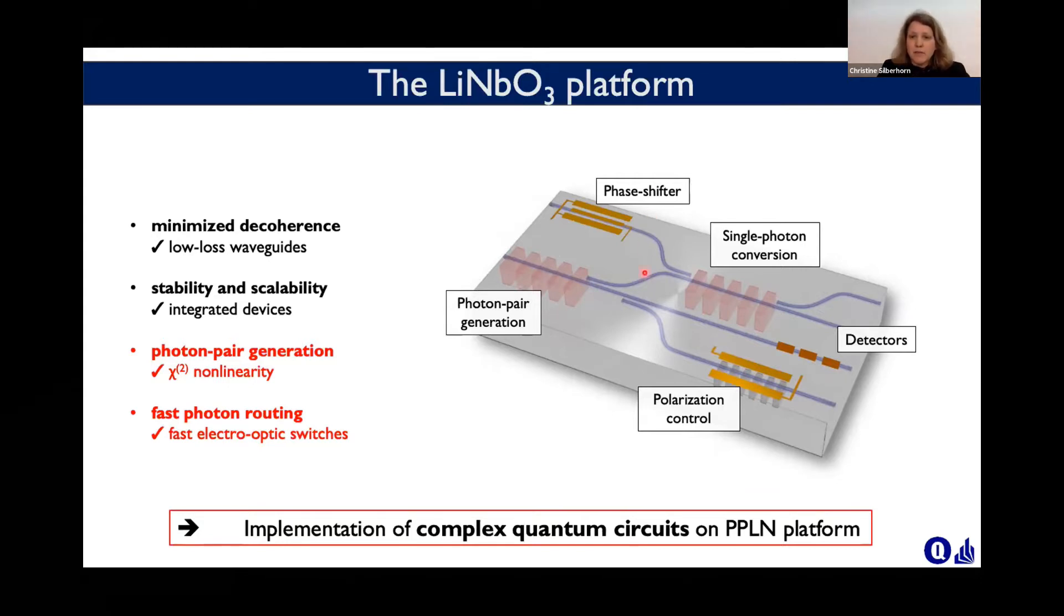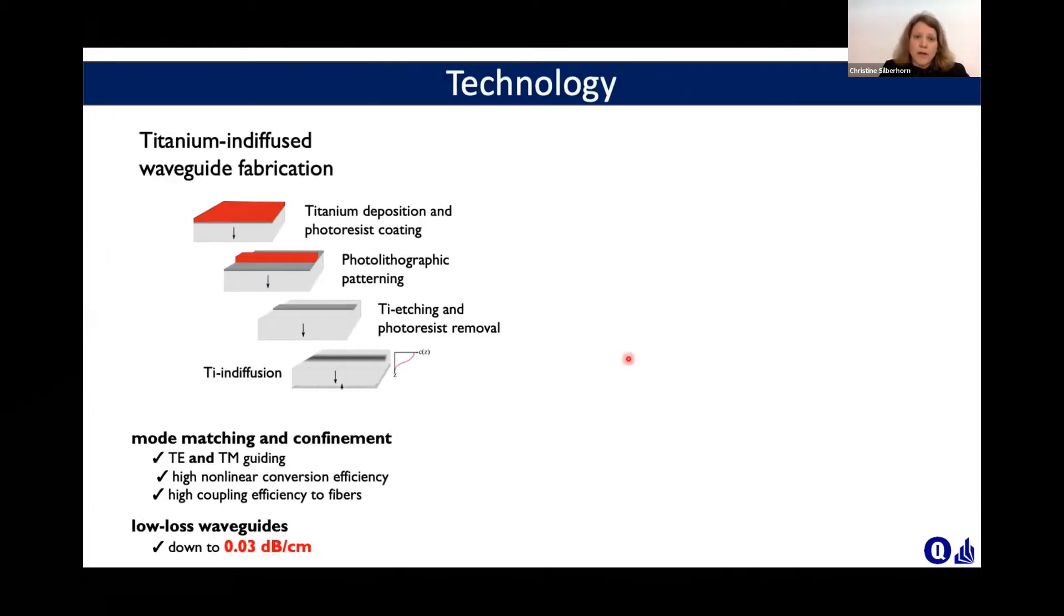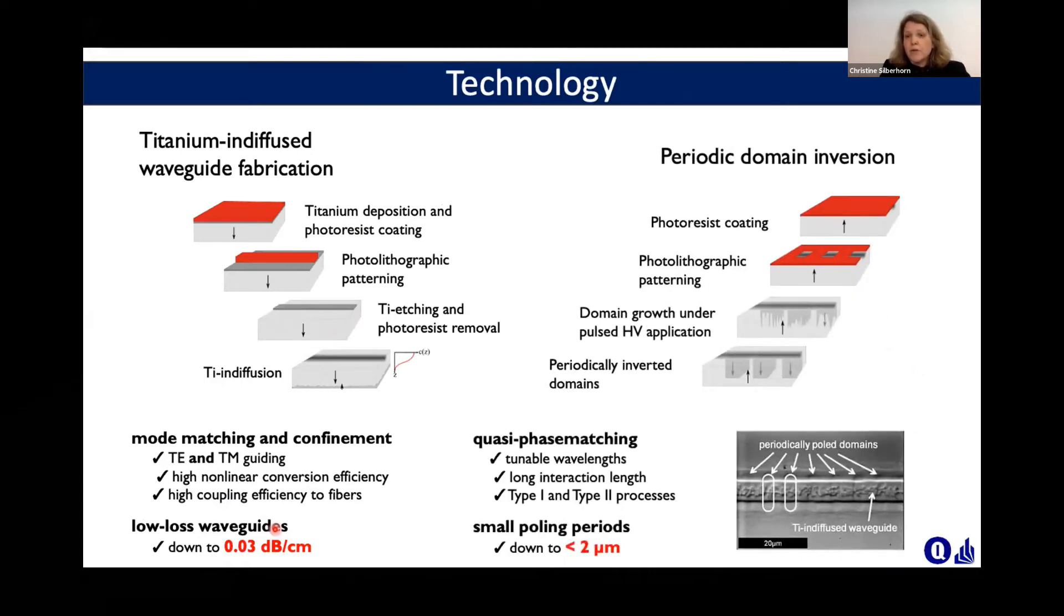Let me briefly introduce the technology we use for that. Most of you are using titanium diffused waveguides, where you have a titanium deposition, photolithography, and then titanium diffusion to generate your waveguides. The advantage of these type of waveguides is that they support TE and TM guiding, so you can use both polarizations. We have waveguides down to 0.03 dB per centimeter, which is a very important property for quantum devices. The next step is then periodic poling, where we improved the poling periods down to 2 micrometers and less.